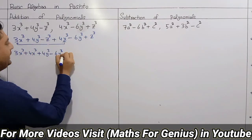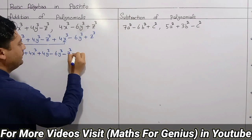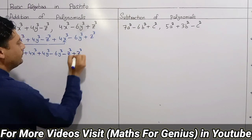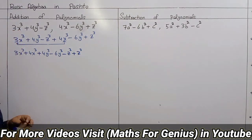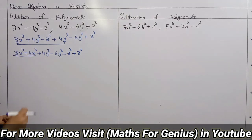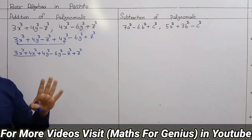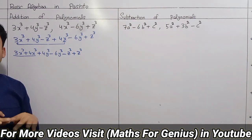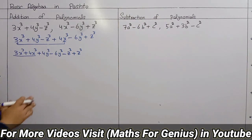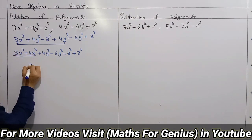Z cube power over S, plus Z cube power over S — this is a simple plus. Now we have addition of polynomials. The variables must be like terms. If you have X power 3, then you can add with X power 3.